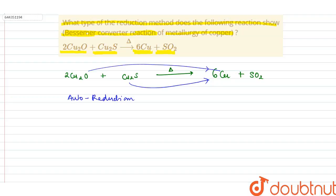Auto-reduction, or self-reduction. To understand this process, you need to understand the whole procedure. This is the purification of copper ore for the formation of pure copper metal. This reaction is the final reaction of the whole Bessemer converter process. The copper produced in this reaction is known as blister copper.